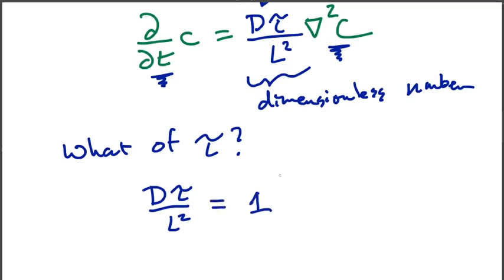If this is all that we know, because any other choice other than one is just an arbitrary rescaling of the system. So we choose that this is equal to one, which tells us that tau is equal to L squared over D.